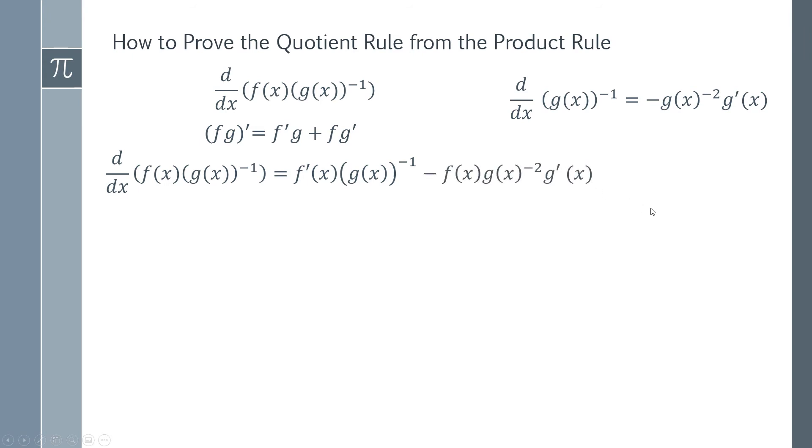We now have part of the way to the answer, however this is quite messy and we have to do some tidying up. What we should look at is any common factors, and it turns out that we could use g(x) to the minus two as a factor.